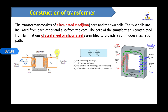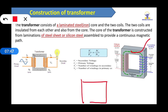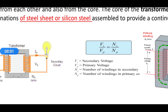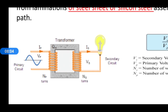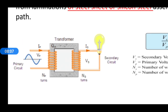This is the construction of transformers. The transformer has a laminated core. There is a primary circuit and a secondary circuit — this is the input side. The primary circuit carries current, and due to mutual induction and electric flux, current is induced in the secondary circuit.